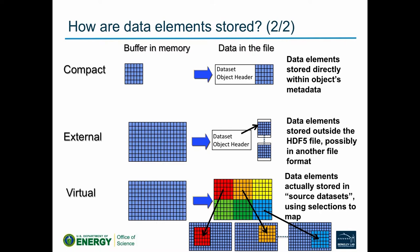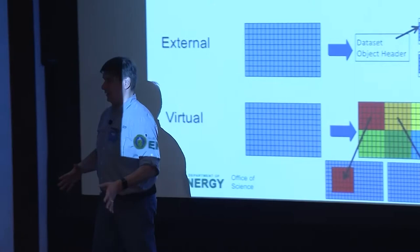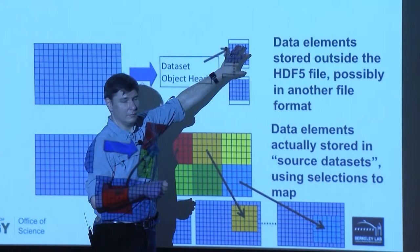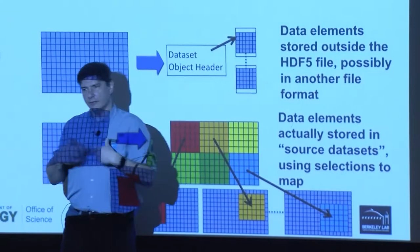External data storage lets you point at legacy binary data from an HDF5 dataset. If you have Fortran binary files someone else created, you can put an HDF5 wrapper around them — attach metadata and attributes — and make them compatible with the HDF5 ecosystem without actually importing the data. The HDF5 header stores the pointer, and all HDF5 operations will jump over and access your binary file transparently.